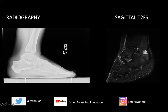Within Kager's fat pad, we have heterogeneous T2 bright signal. The retrocalcaneal bursa is a potential space here, and we have evidence of retrocalcaneal bursitis — fluid accumulating in Kager's fat pad or this retrocalcaneal bursa. If fluid accumulated superficial to the Achilles tendon, we would call that pre-Achilles bursitis. But here, this is retrocalcaneal bursitis.